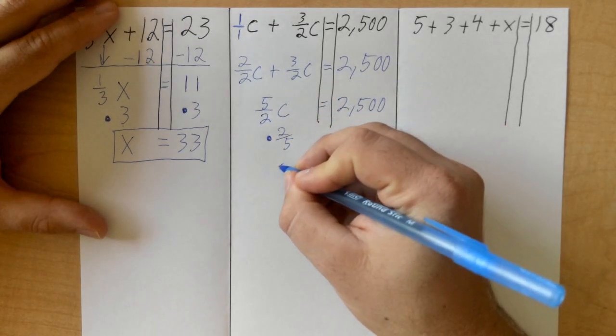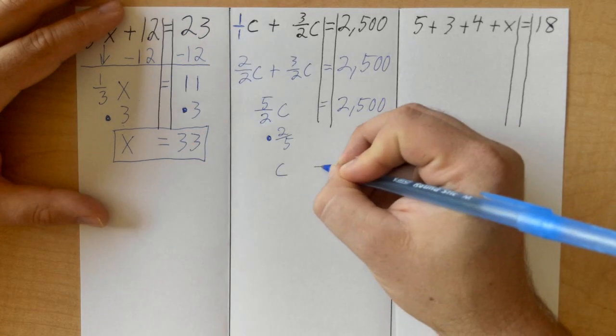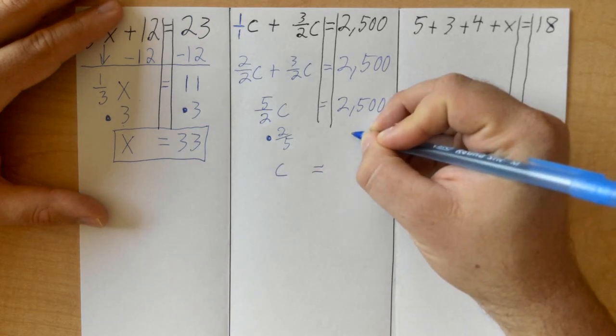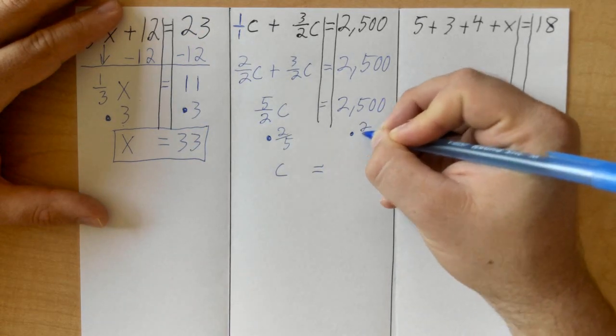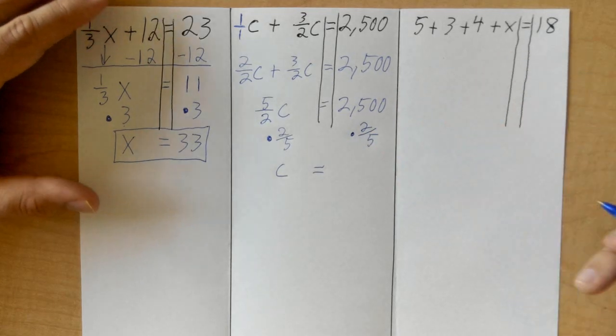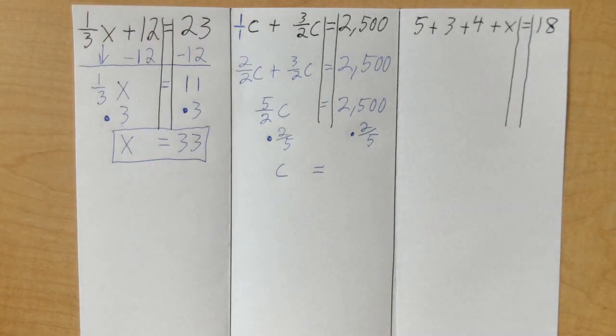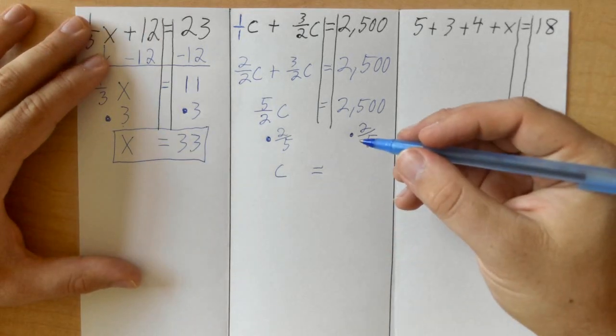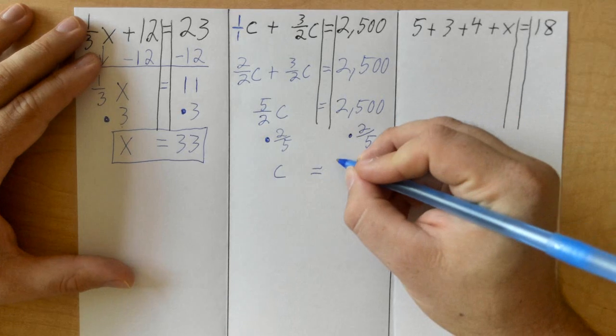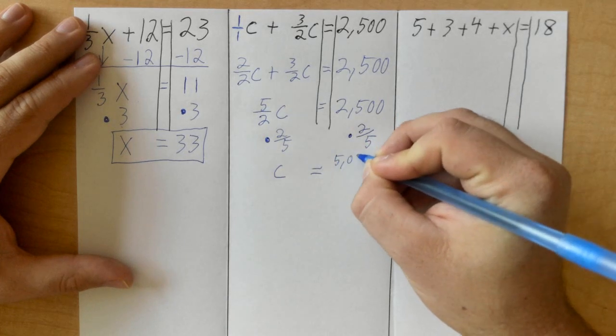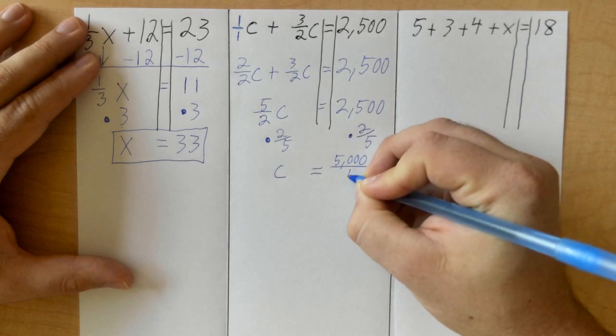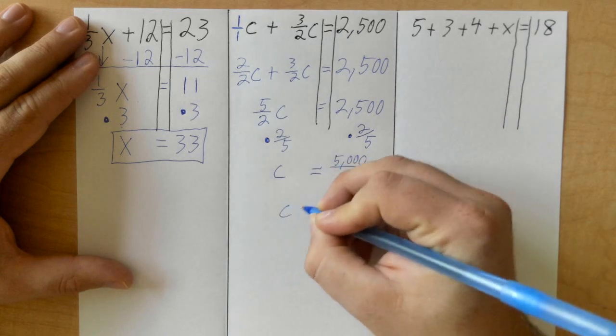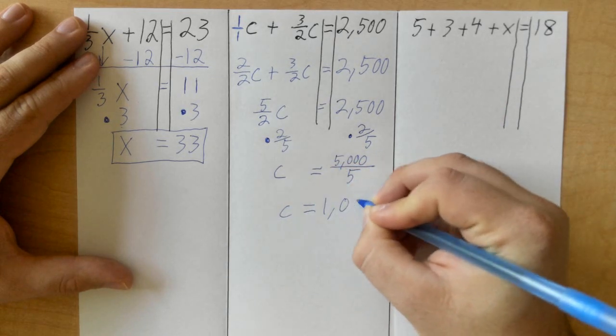So we're gonna take 2500 times the two-fifths. I could think of this as multiplying by two and then dividing by five. That actually kind of works out nicely because you get five thousand over five, and so C would just be one thousand. You could also make this a decimal of point four and multiply 2500 by point four.